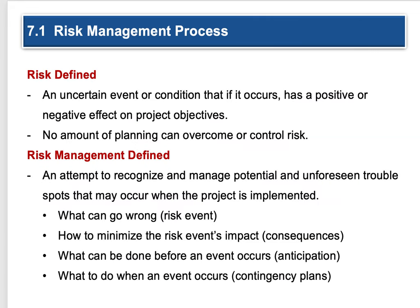Risk management: first, risk needs to be defined. Risk is an uncertain event or condition that, if it occurs, has a positive or negative effect on project objectives. People typically think risk means negative, but there can be positive things too. No amount of planning can overcome or control risks — it just happens. Risk management is an attempt to recognize and manage potential and unforeseen trouble spots that may occur when a project is implemented. No matter what you do, something goes sideways. So: what can go wrong as a risk event? How do you minimize the risk event's impact? What can be done before the event occurs? And what do you do when an event occurs? You have a contingency plan.